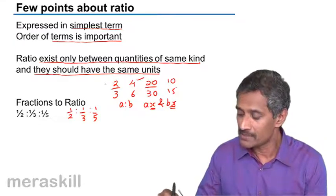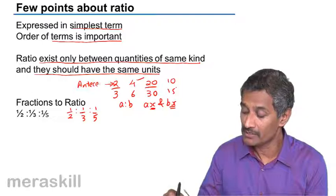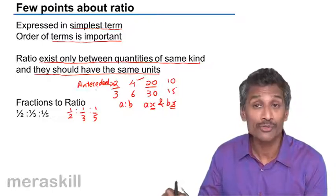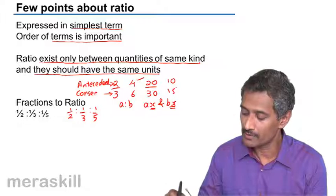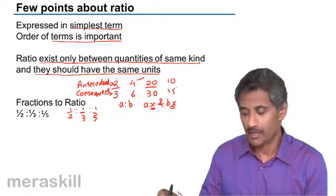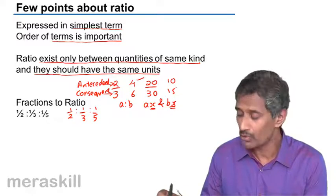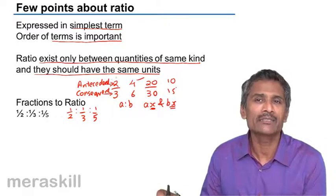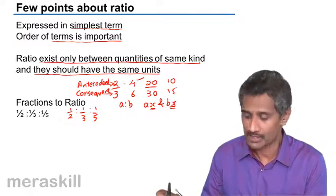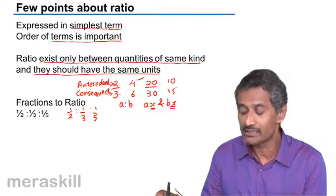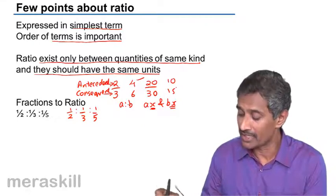In each of these cases, the first term is called the antecedent in case of ratios with two terms, and the second term is called the consequent. In simple words, the first term and second term – the first term is called antecedent, that means the one which comes first; consequent which follows it.